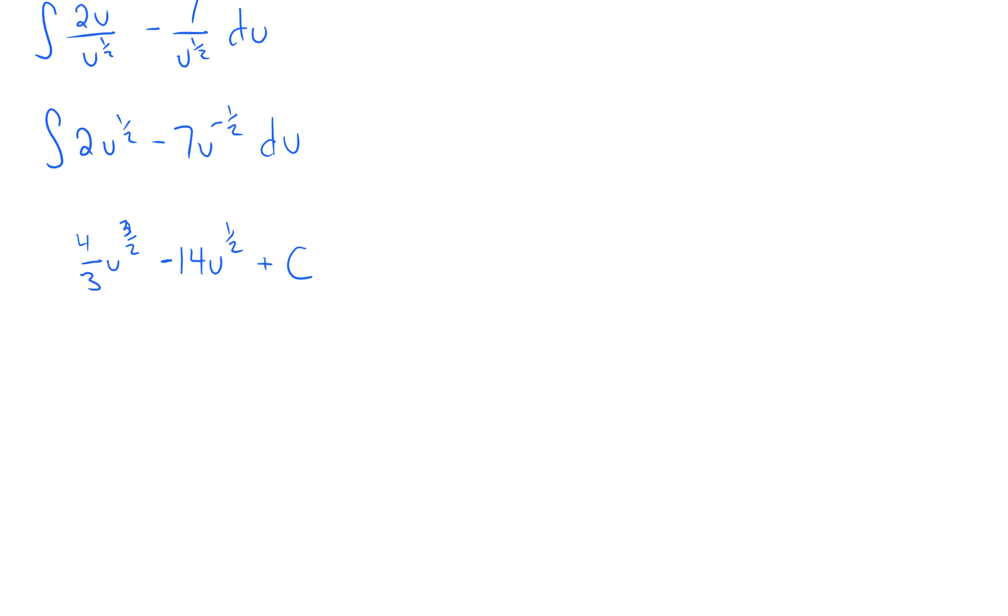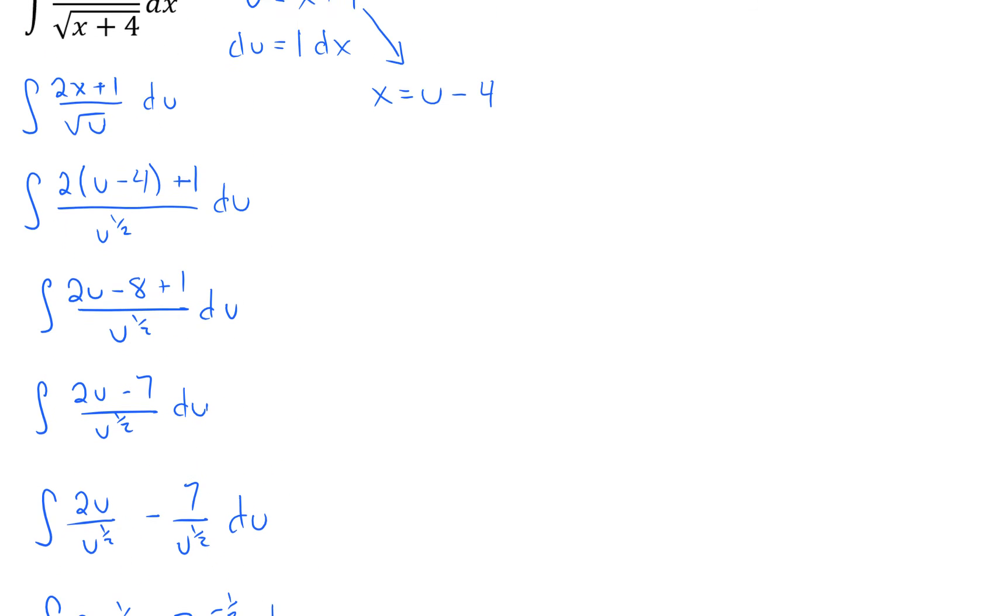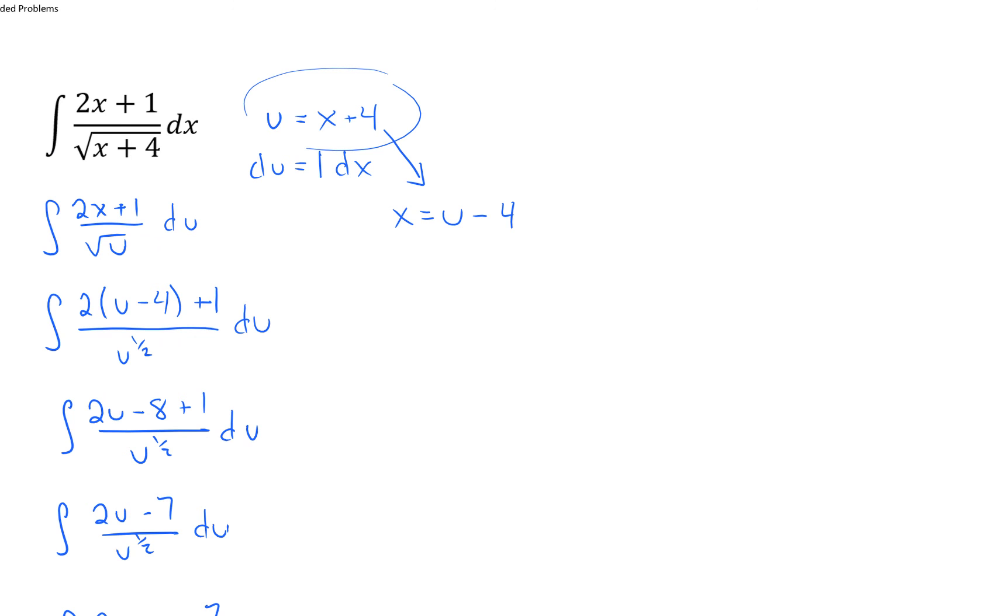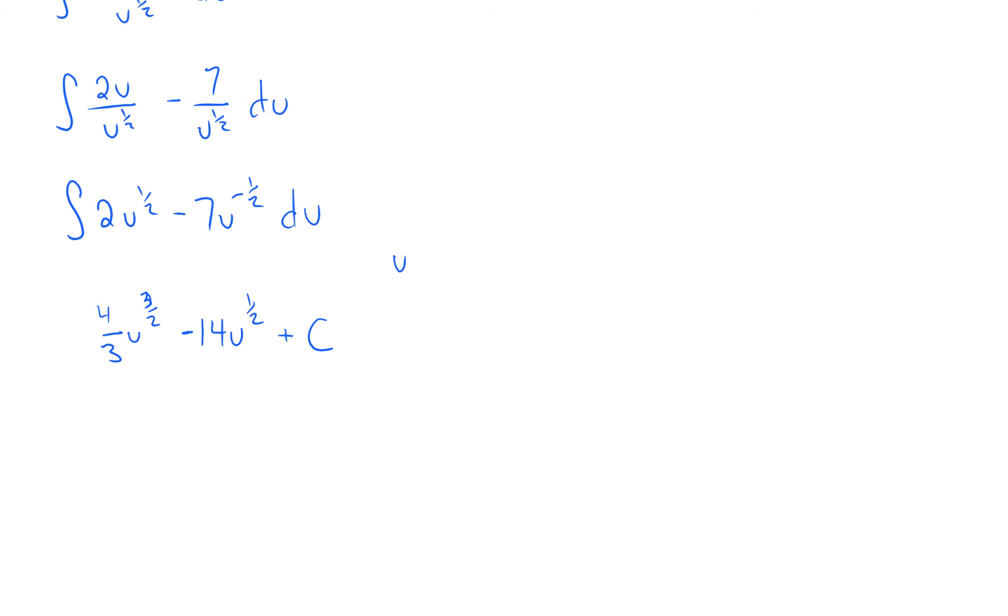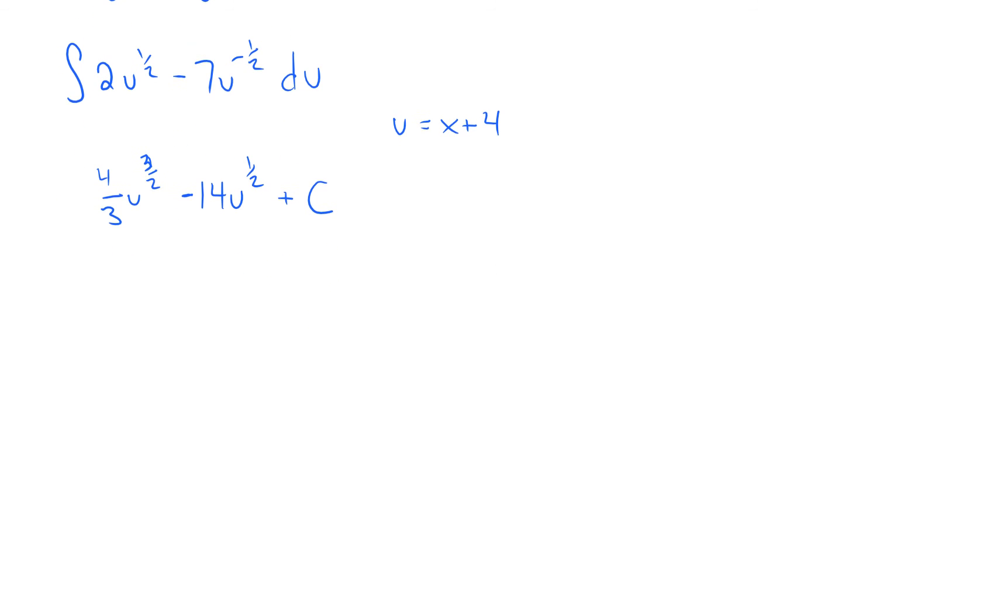But we don't want the integral in terms of u. We want in terms of x. What does u equal? u equals x plus 4. So let me just write this down here for us to see. u equals x plus 4. So my final answer is 4 thirds x plus 4 to the three halves minus 14 x plus 4 to the one half plus c. Now you could rewrite this other guy there as a square root. Might make it look a little neater. But we can leave it like this as our final answer.